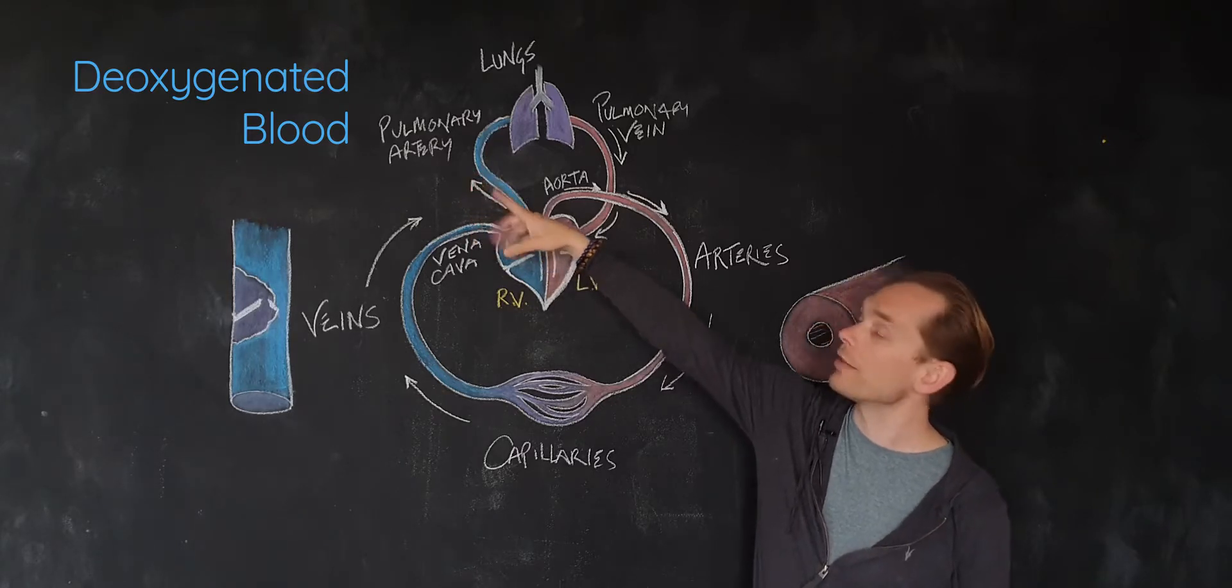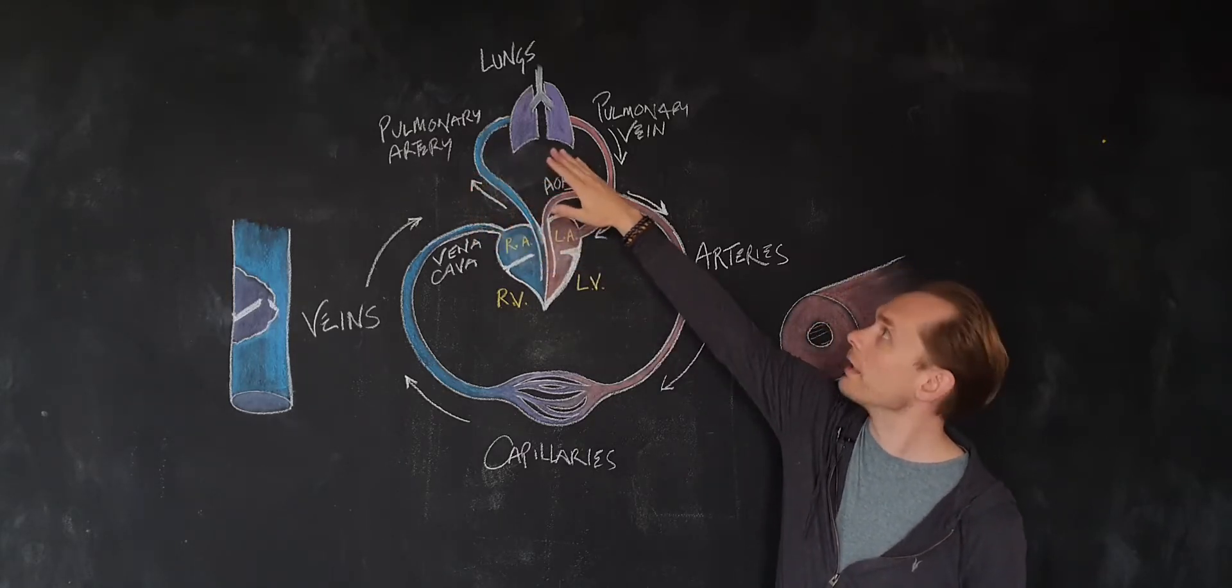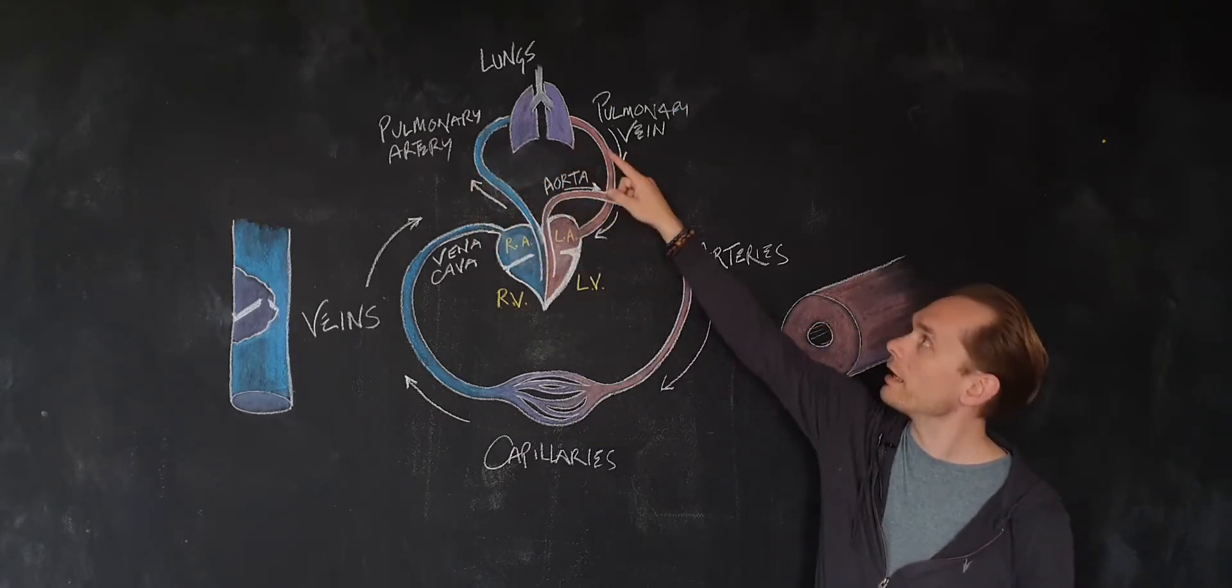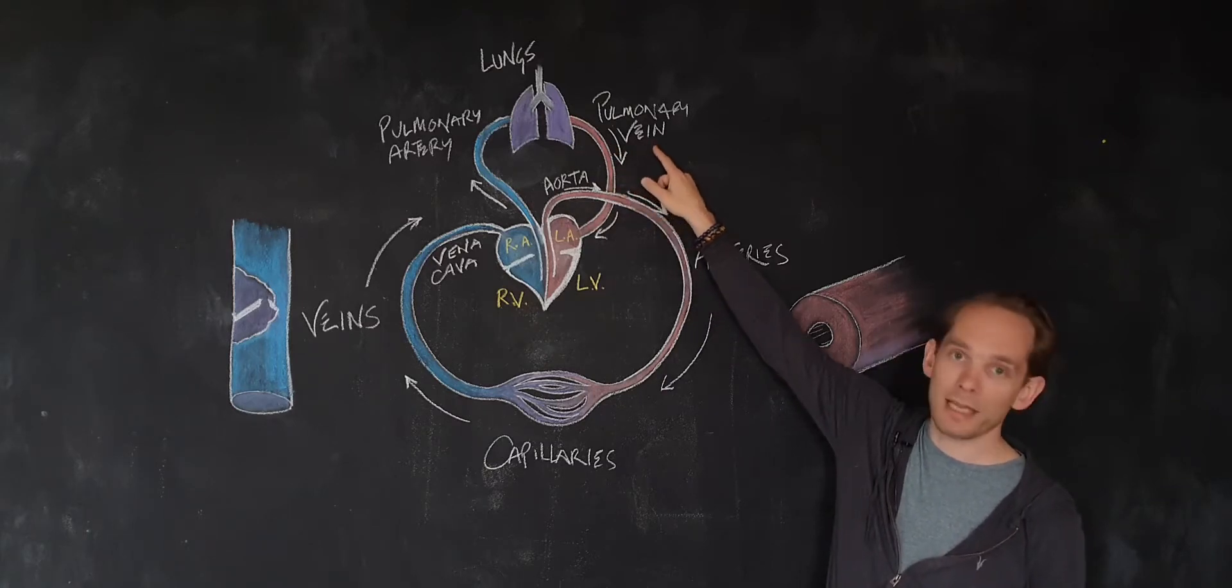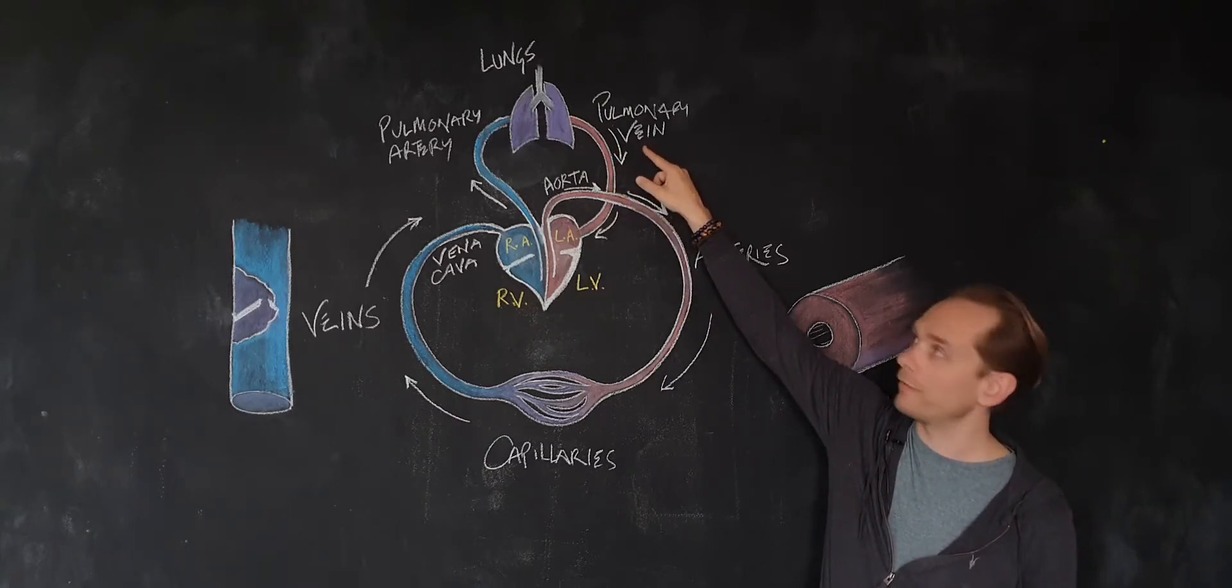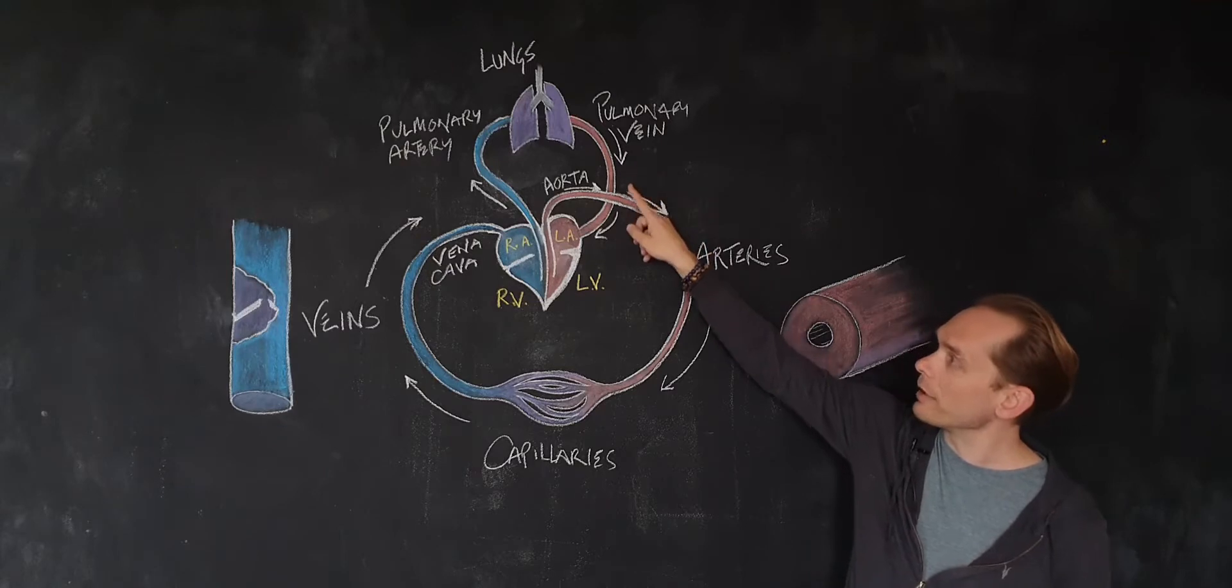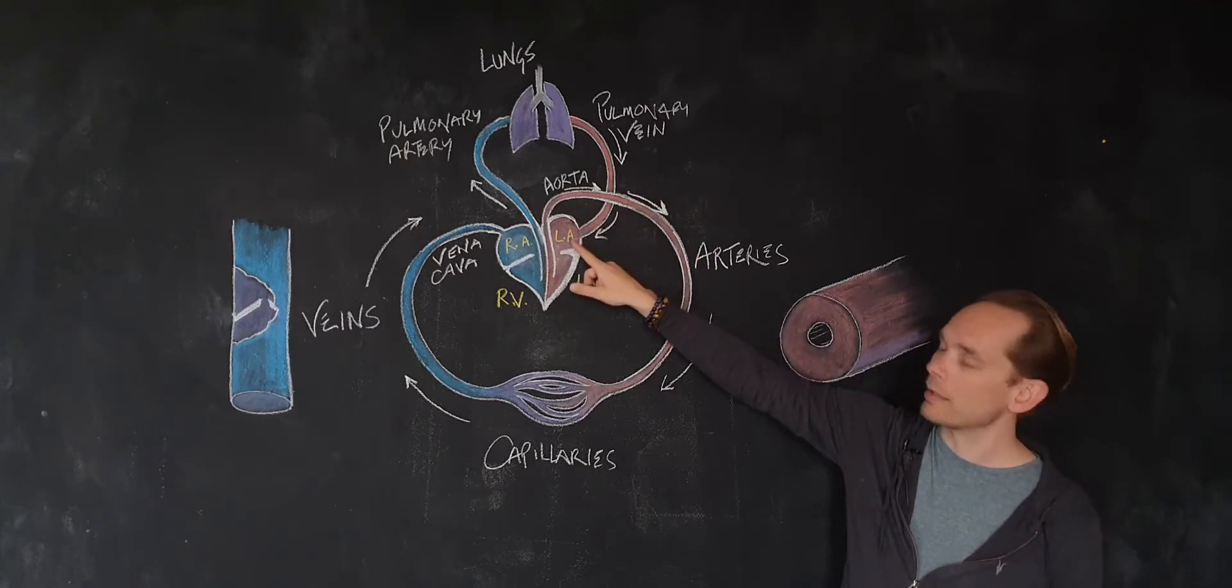Then after that, the pulmonary vein. Again, it's a vein, so it's carrying blood in. Notice the word 'in' in 'vein' will help you remember—that's carrying blood into the heart, into the left atrium.